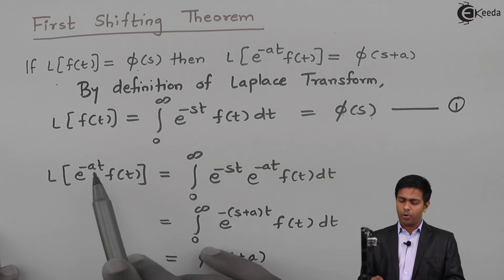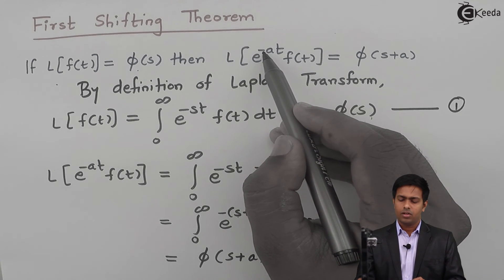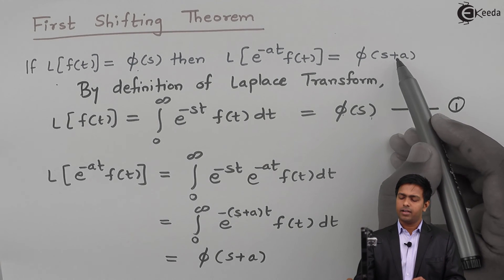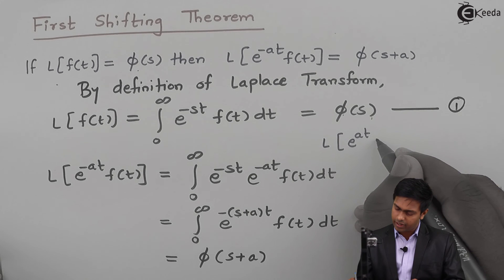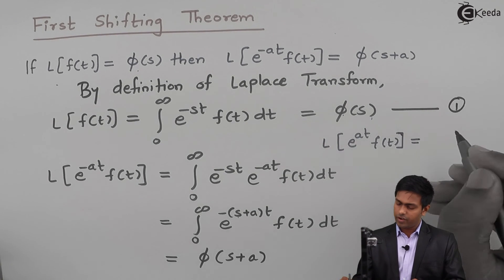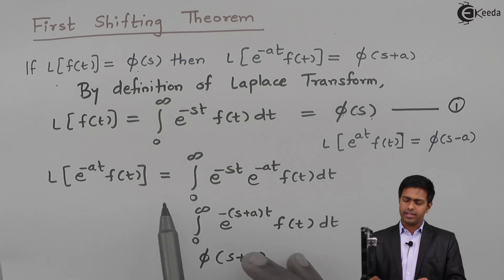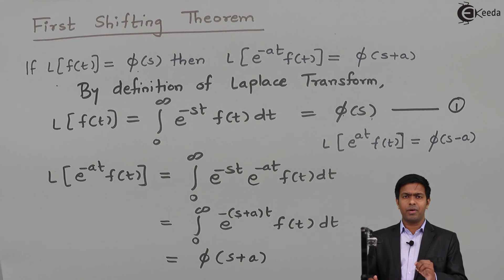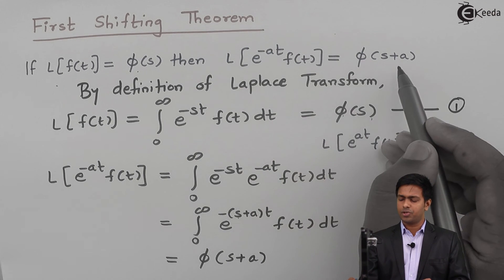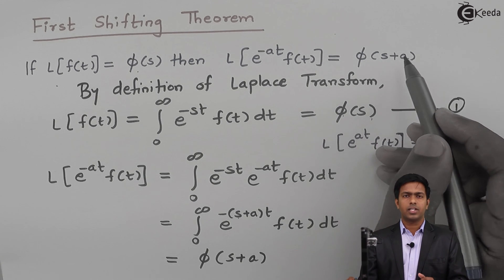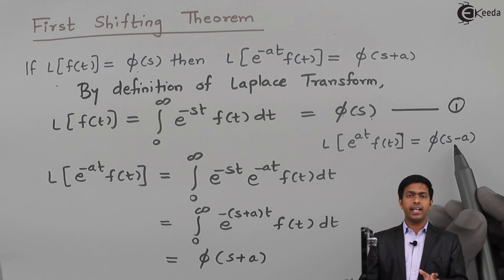We can also express this property another way: when the power of e is positive at, then we get F(s minus a). So if we have the Laplace transform of e raised to positive at into f(t), then we get F(s minus a). We can derive this result using the same method. So remember: whenever the coefficient of t is minus a, the substitution gives F(s+a); and whenever the coefficient of t is positive a, we get F(s minus a).